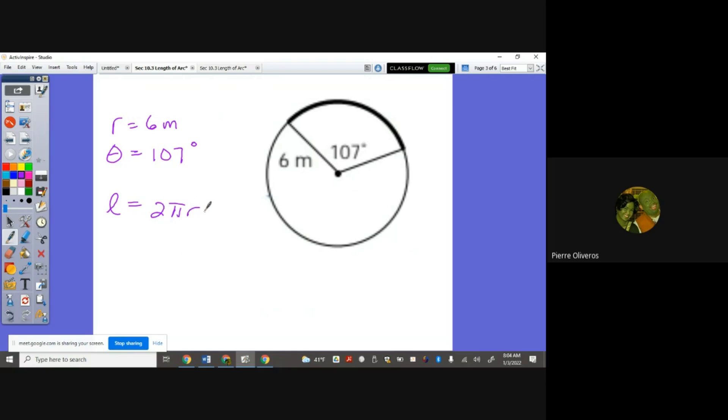is 2πr theta over 360. So 2π times 6, remember the centimeters, and 107 degrees over 360. We will punch this in our calculator to get the answer. So we're going to enter 2π times 6 times 107 divided by 360. The answer here is the length of the arc is 11.21 centimeters.